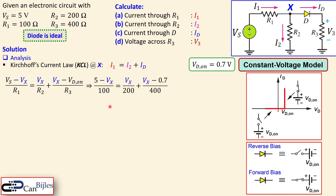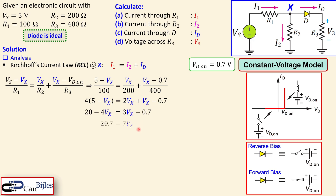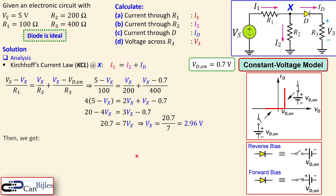Substituting the values: (5 − Vx)/100 = Vx/200 + (Vx − 0.7)/400. Multiplying both sides by 400 gives: 4(5 − Vx) = 2·Vx + (Vx − 0.7). Working out the parentheses and collecting terms gives Vx = 2.96 volts. This is an important intermediate result used to find all other required values.